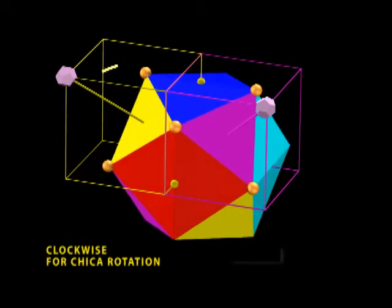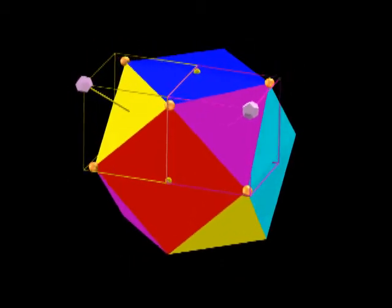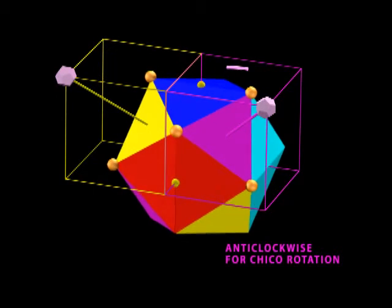Now notice that the three spheres of the Chica cube, they are rotating clockwise this time. And the Chico spheres, they work the opposite.